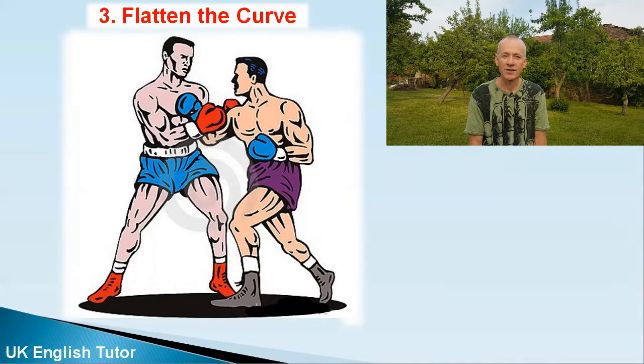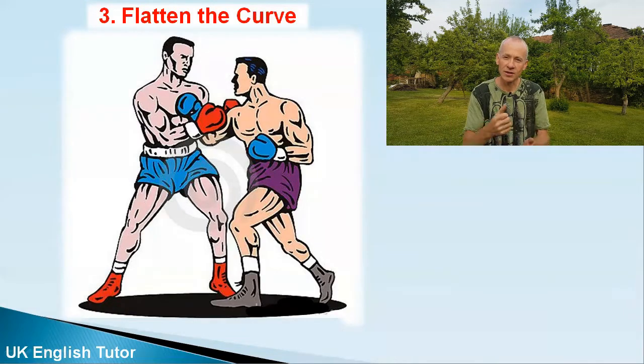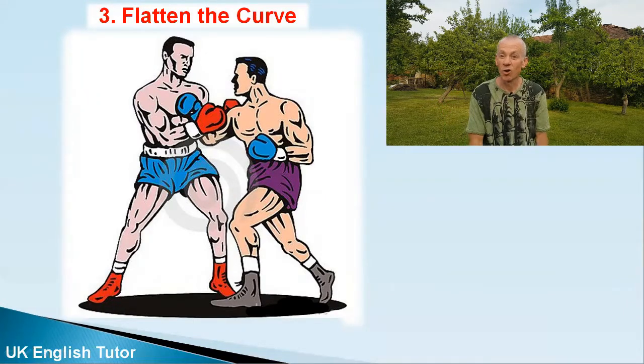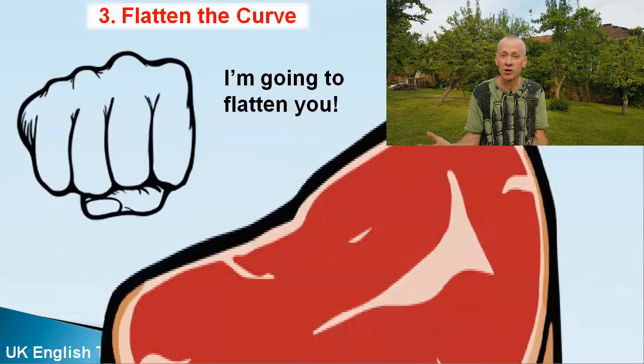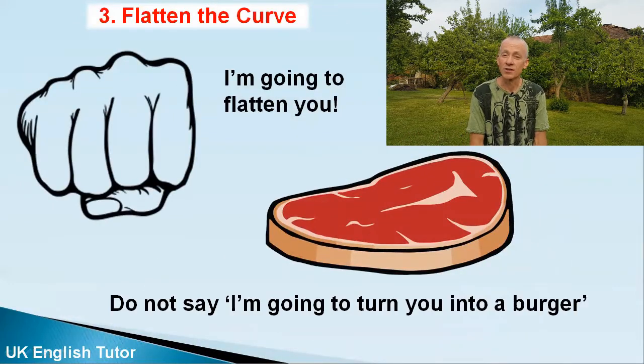There is a phrase in English — 'I'm going to flatten you' — and it's a threat of violence that one boxer might use to another boxer before a fight. It implies that this boxer is going to punch the other boxer so much that he ends up as a flat piece of meat or a burger. If before the fight he said 'I'm going to turn you into a burger,' it wouldn't have the same effect.